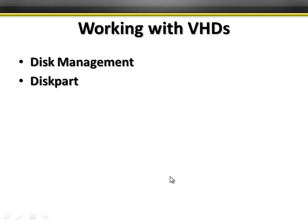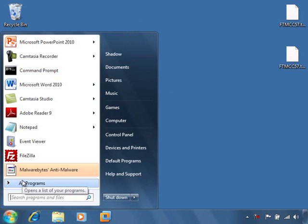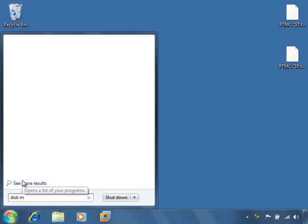VHDs are virtual hard drives and they're used for virtual machines, or starting with Windows 7 and Server 2008 R2, they can also be used for storing files or even booting the computer. You can make VHDs with Disk Management or with DiskPart. So first we'll take a look at Disk Management. You can get into Disk Management either by just typing 'disk management' and it'll show up in your search list.